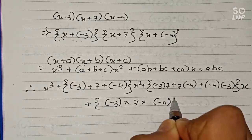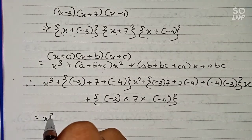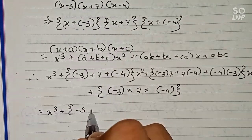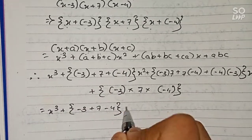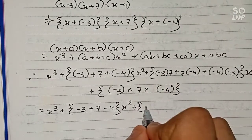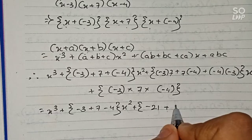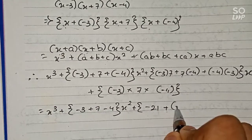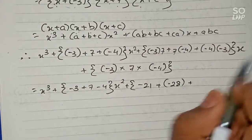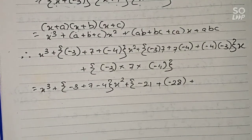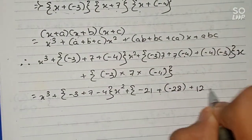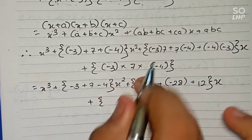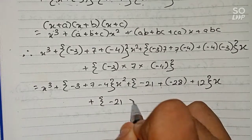For the x squared term: minus 3 plus 7 plus minus 4 equals 0, so the x squared coefficient is 0. For the x term: minus 21 plus minus 28 plus 12, and for the constant: minus 3 times 7 is minus 21, multiplied by minus 4.